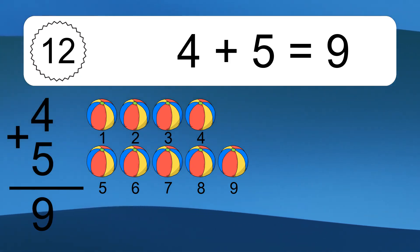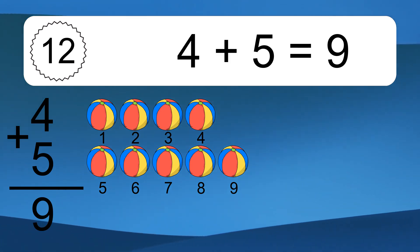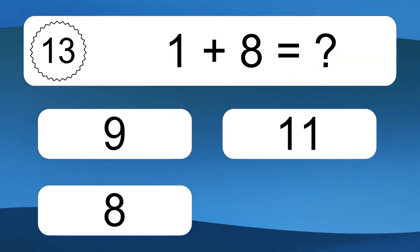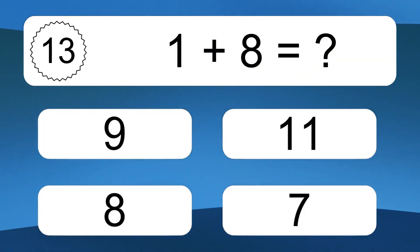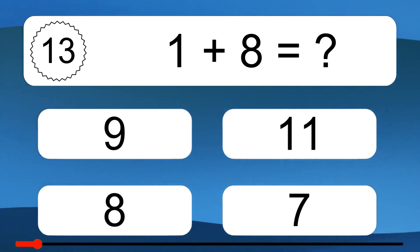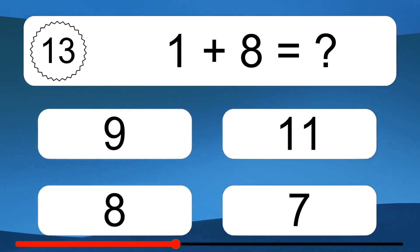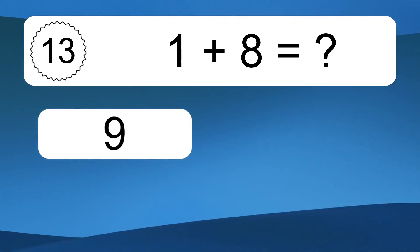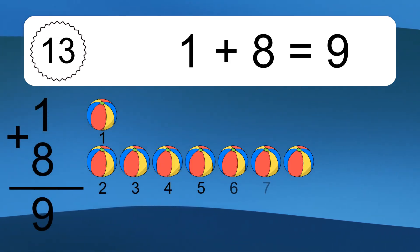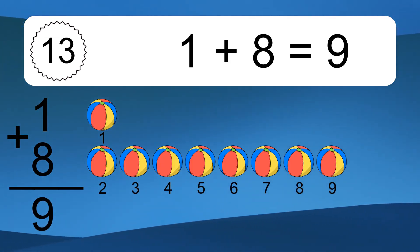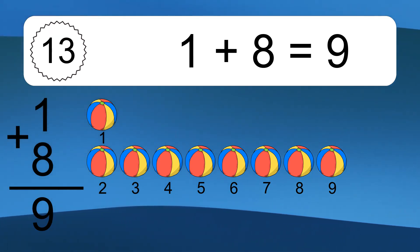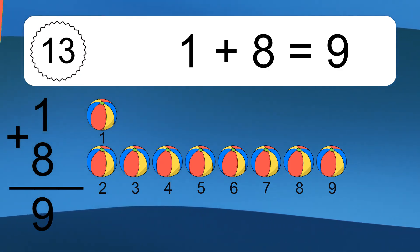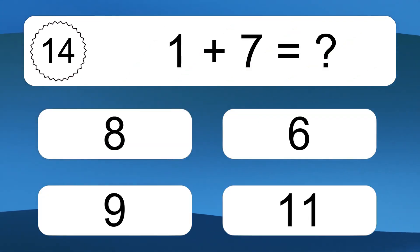Let's count it. 1, 2, 3, 4, 5, 6, 7, 8, 9. 1 plus 8 equals what? 1 plus 8 equals 9. Let's count it. 1, 2, 3, 4, 5, 6, 7, 8, 9.